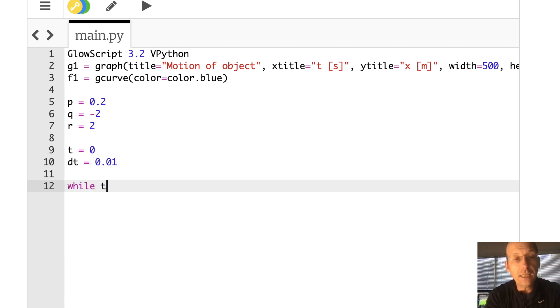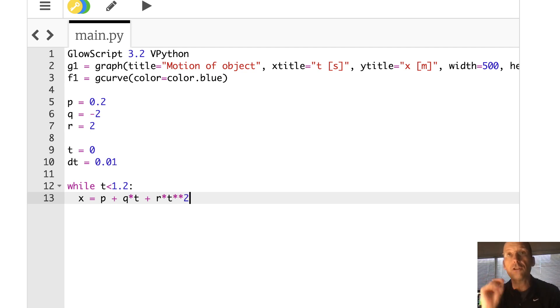So now I can say while T is less than 1.2, that's what I wanted to do, I'm going to plot the thing. So the first thing I need to do is calculate X. That's not too hard. I'm just going to calculate X. X equals P plus Q times T plus R times T squared. Squared in Python is star star 2.